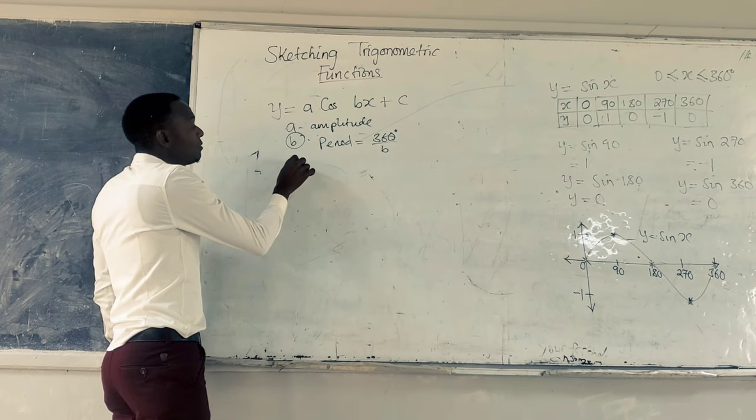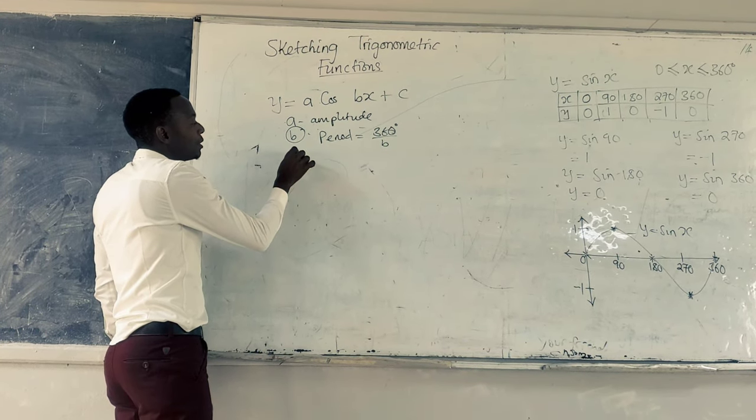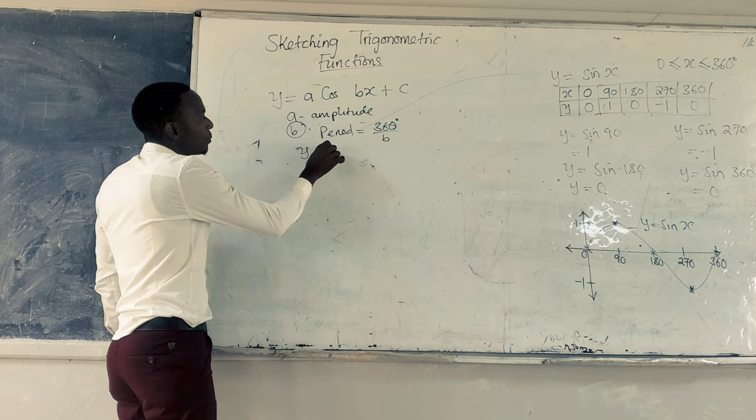Now, C gives us the principal axis. The principal axis means that Y is equal to C.